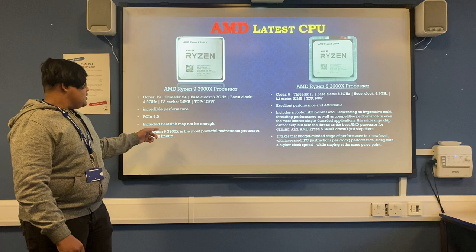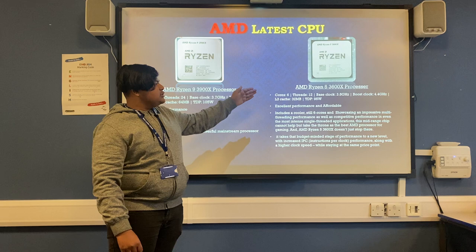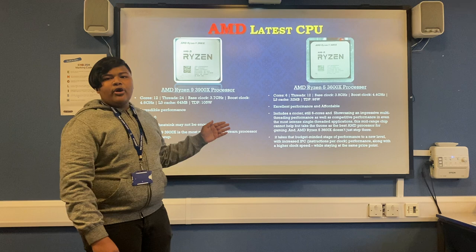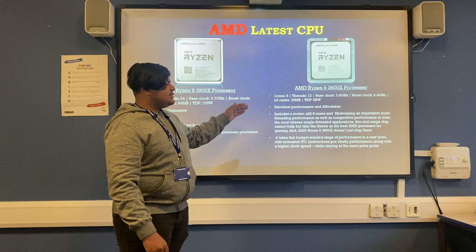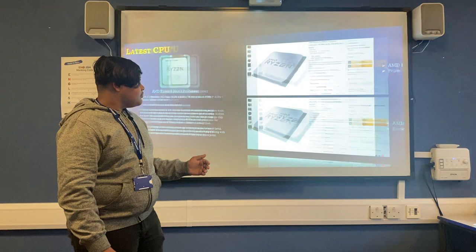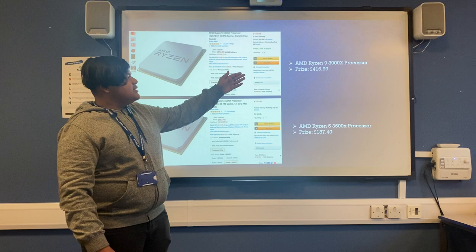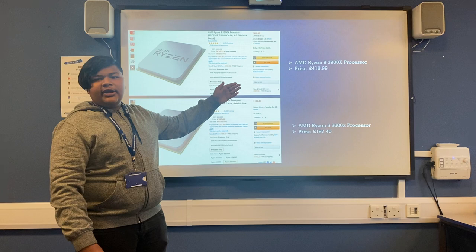The Ryzen 9 3900X is the most powerful mainstream processor in AMD's lineup. The AMD Ryzen 5 3600X processor gives you 6 cores, 12 threads, a base clock of 3.8 GHz, a boost clock of 4.4 GHz, 32 MB cache, and a TDP of 95W. It delivers excellent performance and is affordable for a normal person. The AMD Ryzen 9 3900X costs around £417, and the AMD Ryzen 5 3600X costs around £187.